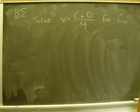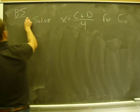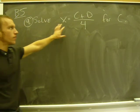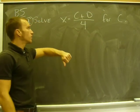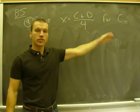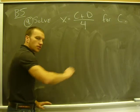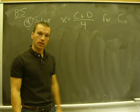B5, this is number 9. The directions are solve this equation for C. So solve X equals C plus D over 4 for C. My final answer should be C equals, and that should have some expression over here.